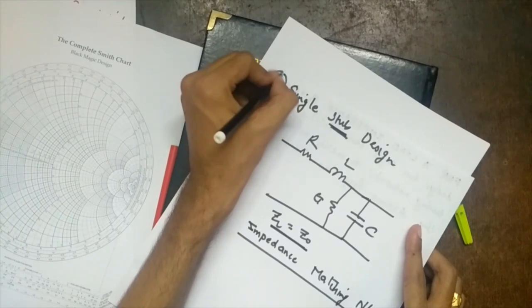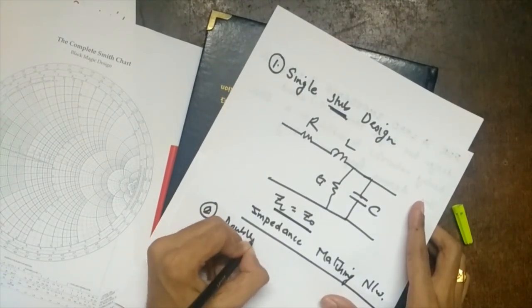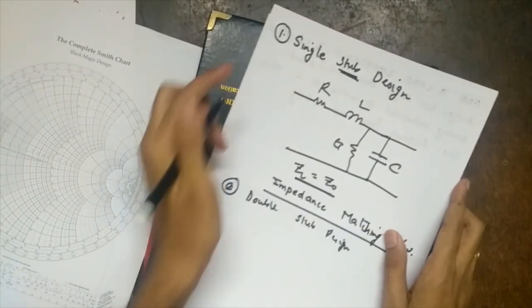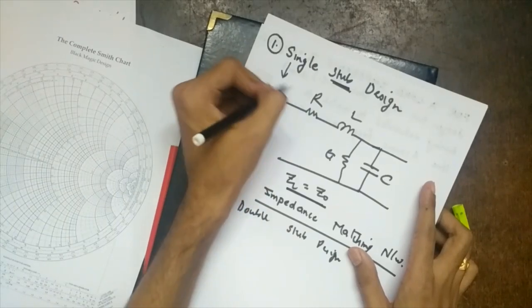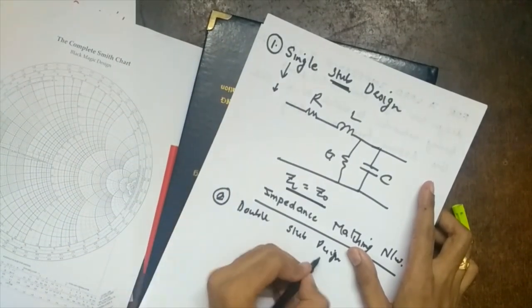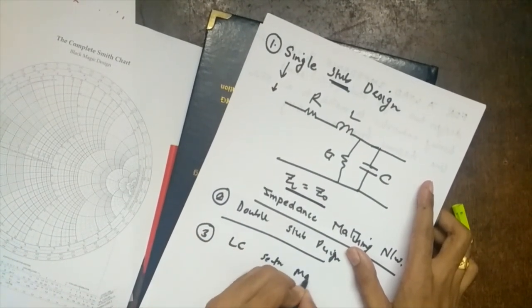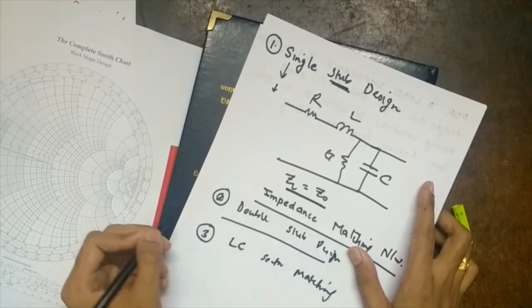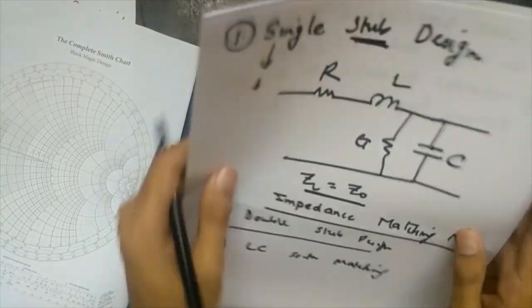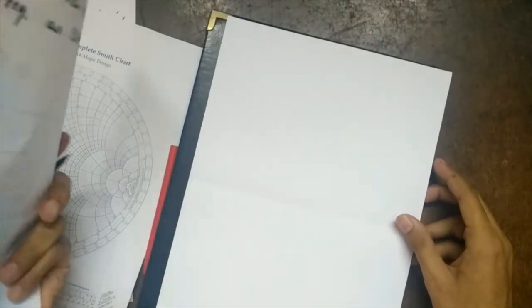The first step in designing an impedance matching network is single stub design. The second is double stub design. In the next lecture we will see an example on single stub design, then another example, then we will move to double stub design, and finally LC section matching. At least one question will be asked on these three designs.